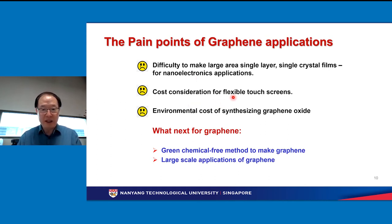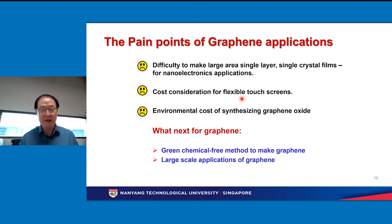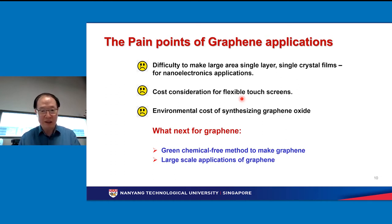For flexible electronics and touch screens, there is no major technical obstacle, but cost is the major problem. You really need to compete with very mature techniques like ITO. People will continue to develop new applications and make graphene applications cheaper and more cost-effective. They also want to develop new applications where existing technologies do not apply — for example, applications requiring very high flexibility, or in combination with biomedical uses.